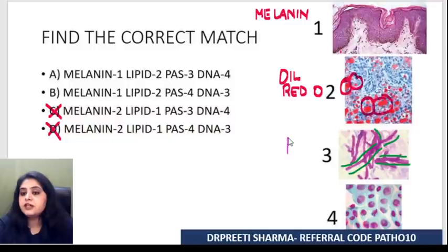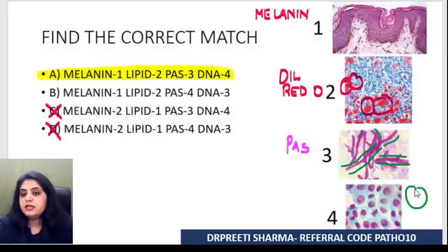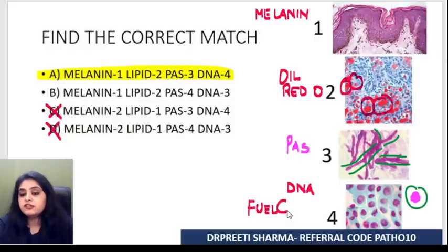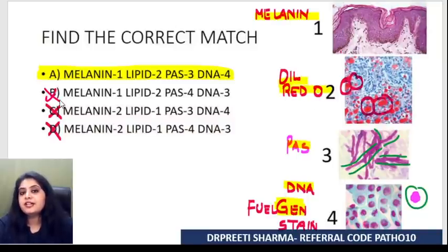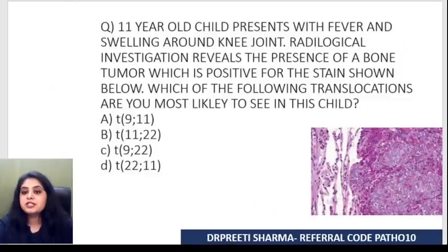For the third image, I see long hyphae with branching — fungal hyphae — and I know fungal hyphae are PAS positive, so the third image is PAS. In the fourth image, the nucleus inside the cell is becoming pink. The stain for DNA is the Feulgen stain — 'DNA reminds me of generations, so the generation stain is Feulgen stain' — and it gives a pink color to the DNA. Final answers: melanin, oil red O, PAS, Feulgen stain.